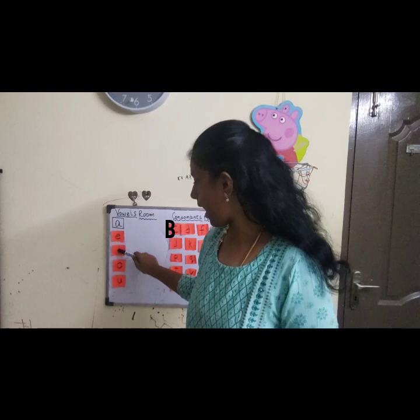In today's class, I am going to teach you an interesting topic: vowels and consonants. All of us know vowels. What are the five vowels in English? A, E, I, O, U. What are the five vowels in English? A, E, I, O and U.